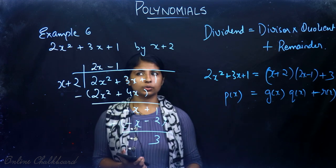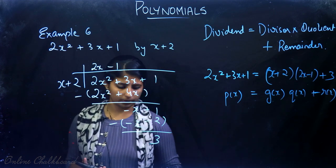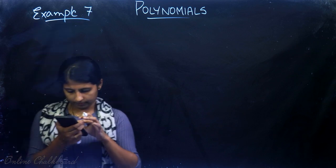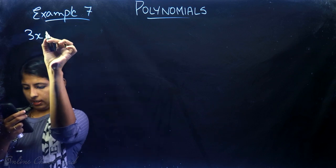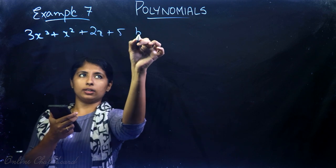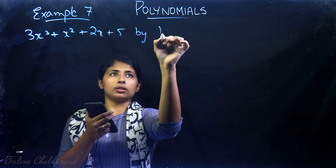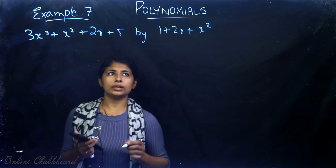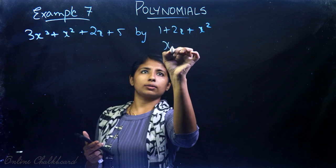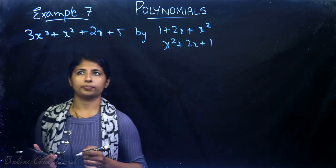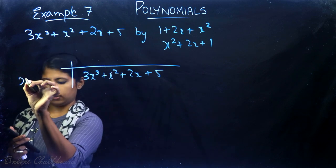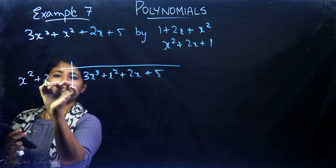Let's look further at what happens when the divisor is a quadratic polynomial. Example 7: divide 3x³ + x² + 2x + 5 by 1 + 2x + x². First, we arrange the divisor in descending order of powers of x: x² + 2x + 1. Then we divide 3x³ + x² + 2x + 5 by x² + 2x + 1.